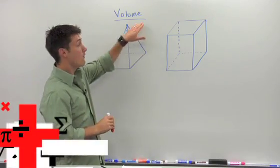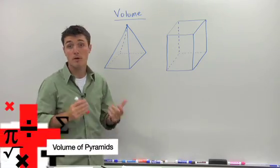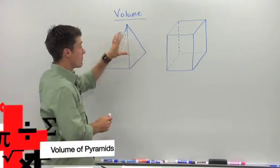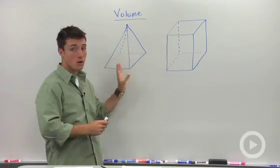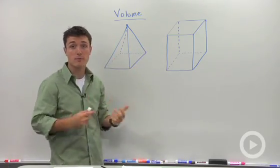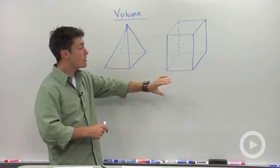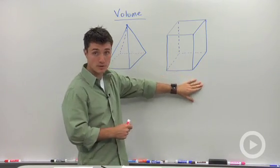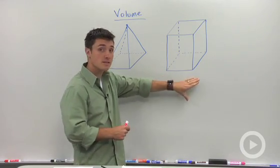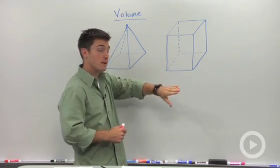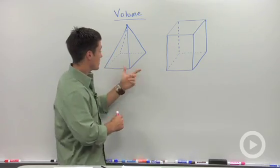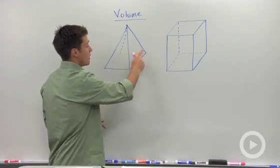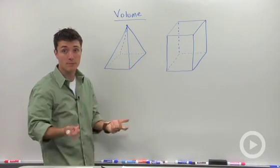When we're talking about the volume of a pyramid — that is, the space enclosed by the three-dimensional figure of a pyramid — we can compare it to a rectangular prism that has the same height and the same base. Notice that in a pyramid, we only have one polygon that's a base.